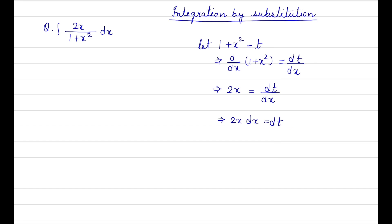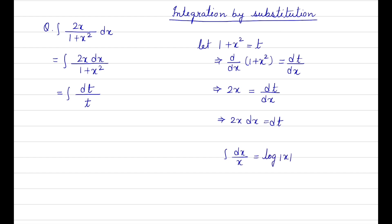Substituting the values: 2x dx divided by (1 + x²) becomes dt divided by t, since 2x dx = dt and 1 + x² = t. We can now directly use the formula: integration of dx/x equals log|x|, taking the positive value.